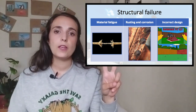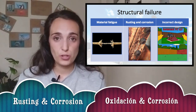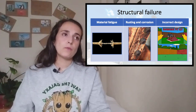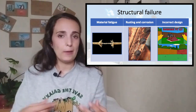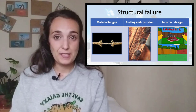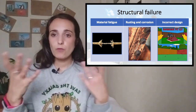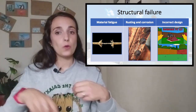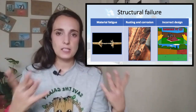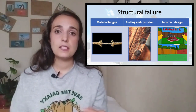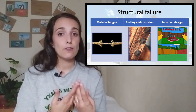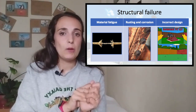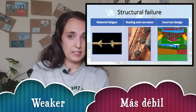The second type of failure is rusting or corrosion. It happens in materials like wood and metal. It is due to atmospheric events like rain, wind, sun, temperature, and changes in temperature. These materials can suffer changes in their structure and in the end they will be weaker than expected.